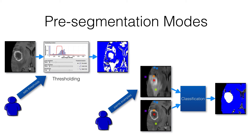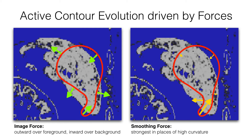The user selects these or paints examples — these are the semi-automated and manual parts respectively. This is the manual part. From there, the segmentation will evolve. I'm just showing the outline of the segmentation here.